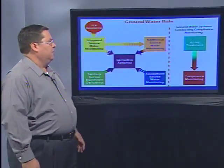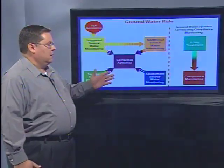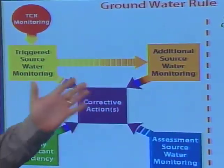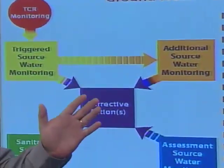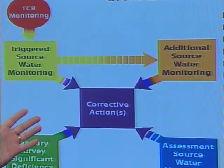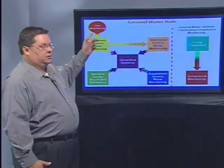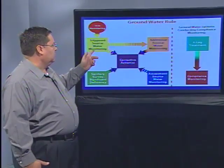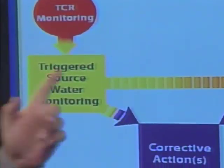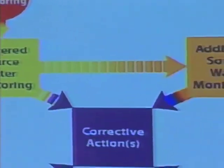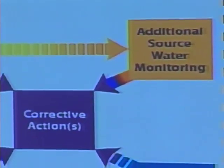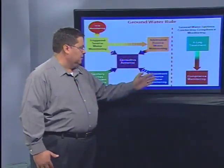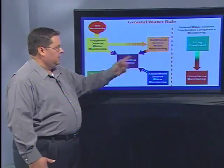Here is another illustration of the overall aspects of the Groundwater Rule and the two basic implementation strategies. First, it always starts out with TCR monitoring. Along with that, should they choose a trigger source monitoring plan, they can get additional source water monitoring, assessment source water monitoring, and sanitary surveys. Sanitary surveys apply to both sides of this dotted line, and it's important to note that corrective actions can occur on either side.